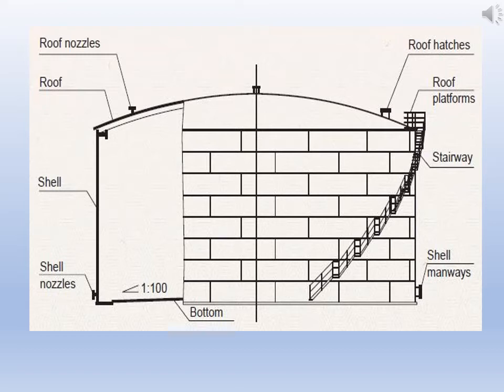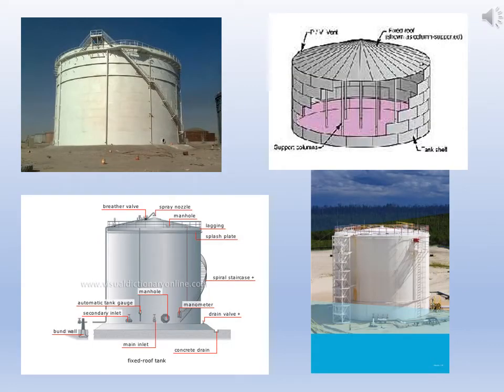Look at the given picture here — a diagram of a fixed roof tank. It shows roof hatches, roof platform, stairway, shell manways, bottom side, shell nozzles, and roof nozzles. You can search Google for 'fixed roof storage tank' to see various images and get more details on this type of storage tank. A number of features are given showing various types of fixed roof tanks.